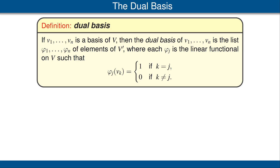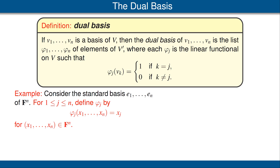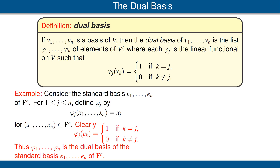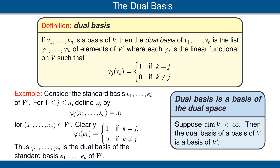Let's look at an example. Consider the standard basis e₁, ..., eₙ of Fⁿ. For each j, define φⱼ to be the linear functional on Fⁿ that picks out the j-th coordinate. That is indeed a linear map from Fⁿ to the scalar field, so it's an element of (Fⁿ)′. Not surprisingly, this gives the dual basis of the standard basis e₁, ..., eₙ of Fⁿ. Our next result states that the dual basis of a basis is indeed a basis of the dual space, so the terminology is well justified. Please be sure to read the proof in the book.